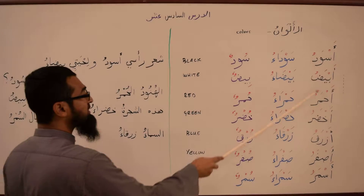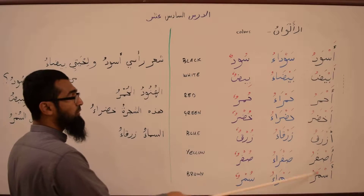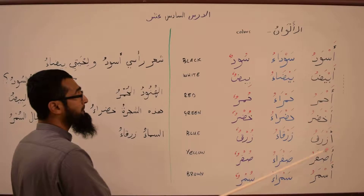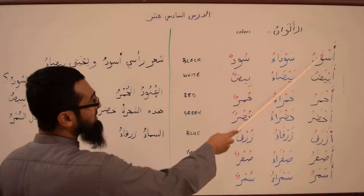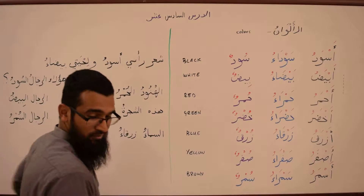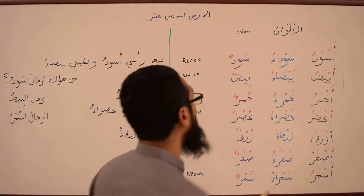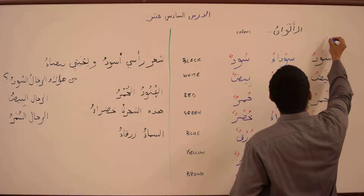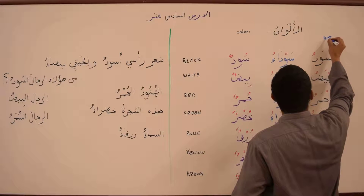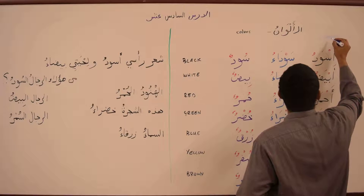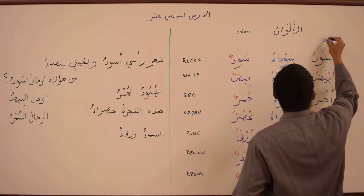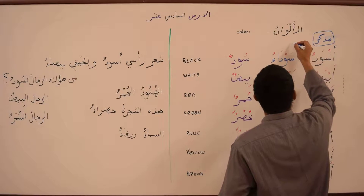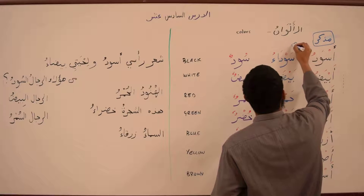This whole list is memnun manasaf. So these words are of the af'alu pattern — they're memnun manasaf. This is the masculine form, so we put an M. Mudhakar is masculine; they're all masculine.